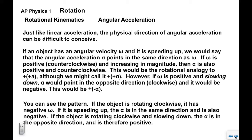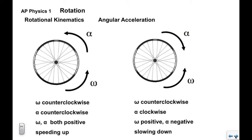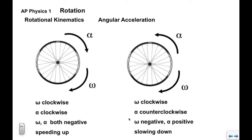Similarly, if omega is negative (clockwise) and speeding up, alpha is also negative — same direction. If rotating clockwise and slowing down, alpha is in the opposite direction and is positive. Visualizing with a bike wheel: counterclockwise omega with counterclockwise alpha means both positive and the wheel is getting faster. Counterclockwise omega with clockwise alpha means alpha is negative and the wheel is slowing. Negative omega with negative alpha means getting faster clockwise; negative omega with positive alpha means slowing down.